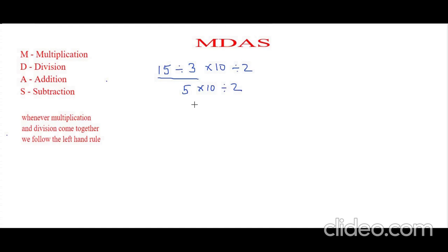Now again we are going to apply the left-hand rule. So 5 times 10 is 50, 50 divided by 2, which is 25. Isn't it easy?